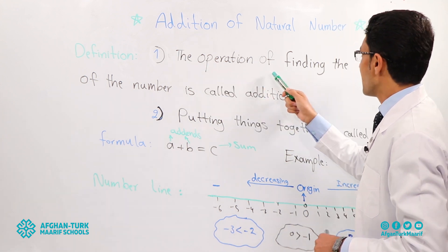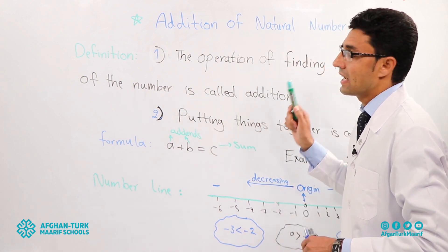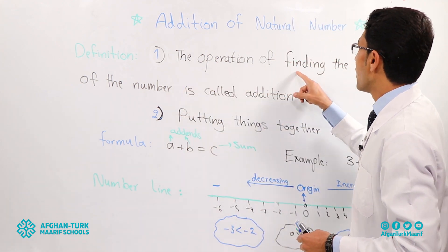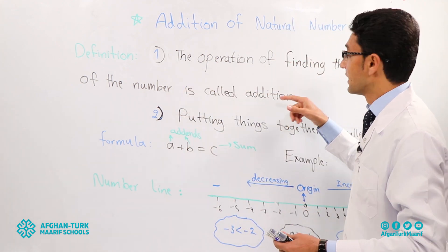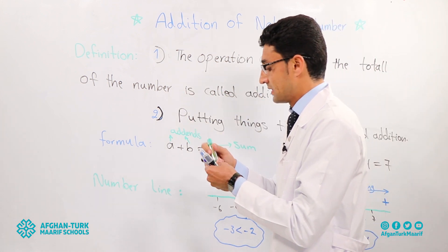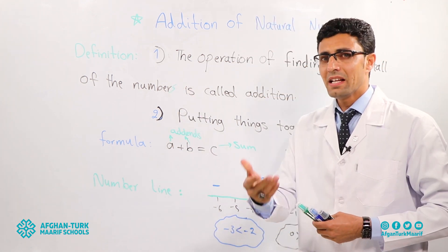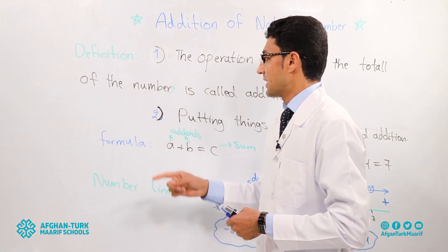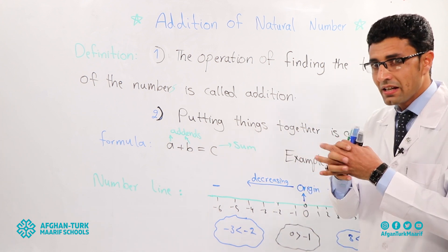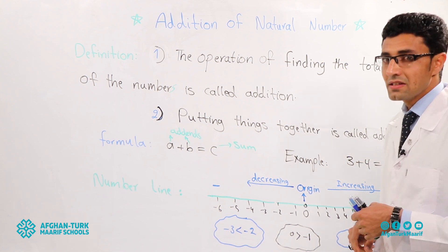Definition number one: the operation of finding the total of numbers is called addition. We are going to find the total of the numbers — it's called addition. Definition number two: putting things together is called addition.